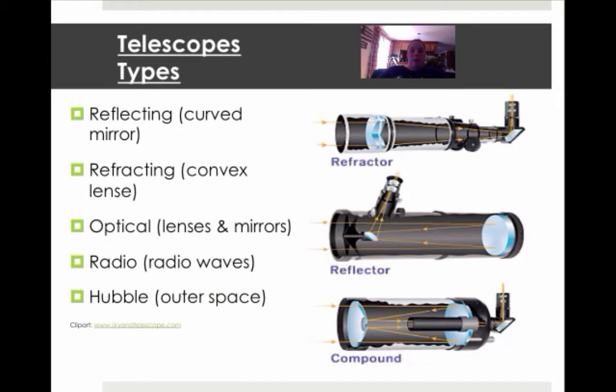So let's talk about telescope types. There's actually many different types if you guys didn't know that. There's reflecting, there is refracting. Be careful, they sound very similar but they're very different. There's optical, radio, and I'm going to talk to you about Hubble.